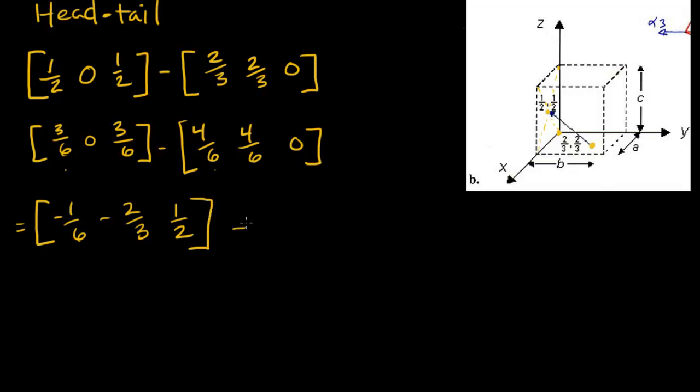Finally, we want to put this into integer form. So I'm going to multiply through by 6, because that's going to give me whole numbers for all of these values. So I'll get negative 1, 6 times 2 is 12, that's negative 4, and then this is 3.